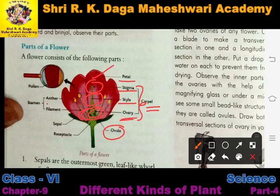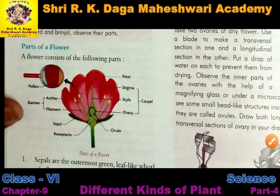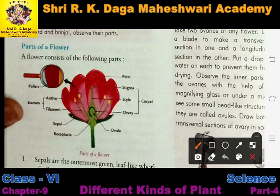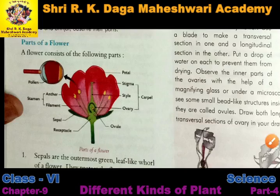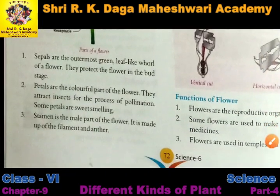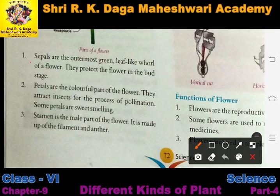Here you can also see the anther and filament. This thin stalk-like structure is the filament, and above it the yellow part is the anther. Then this black part is the sepal. And this part is called the receptacle. So these are some of the parts of the flower.